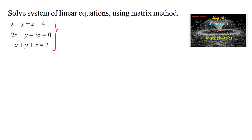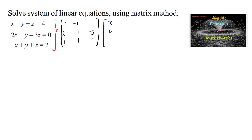The given equations can be represented as a coefficient matrix with rows [1, -1, 1], [2, 1, -3], and [1, 1, 1], multiplied by the variable matrix [x, y, z], which equals the constant matrix [4, 0, 2].